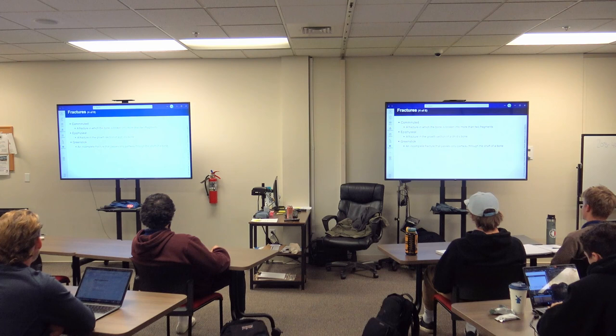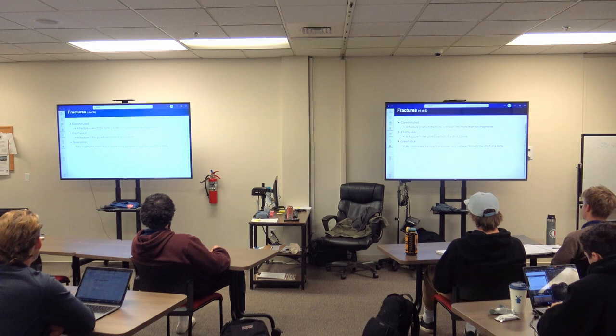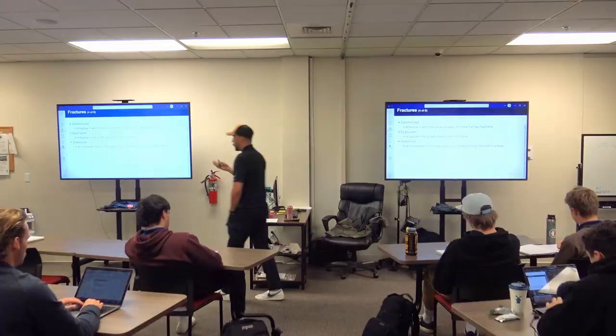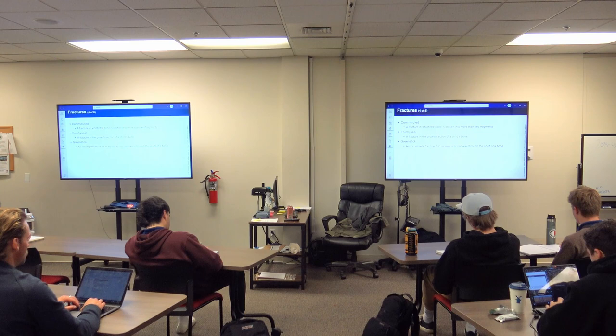Different types of fractures: a comminuted fracture is when the bone is broken into more than two fragments — think of it like flail chest where bone breaks into chips and pieces. An epiphyseal fracture impacts children or growing individuals — it's a break in the growth plate, which can actually disrupt bone growth and lead to long-term deficits like a shortened limb.